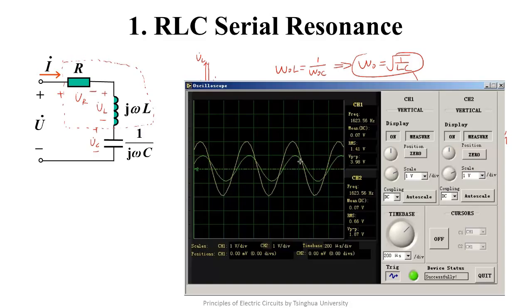This means in resonance the output voltage reaches its maximum value. Also the current in the circuit reaches its maximum value. Obviously, we can observe the similar phenomenon by adjusting the frequency of the source lower.